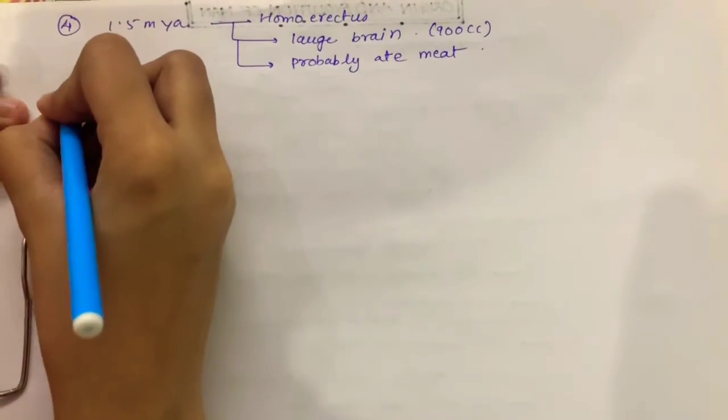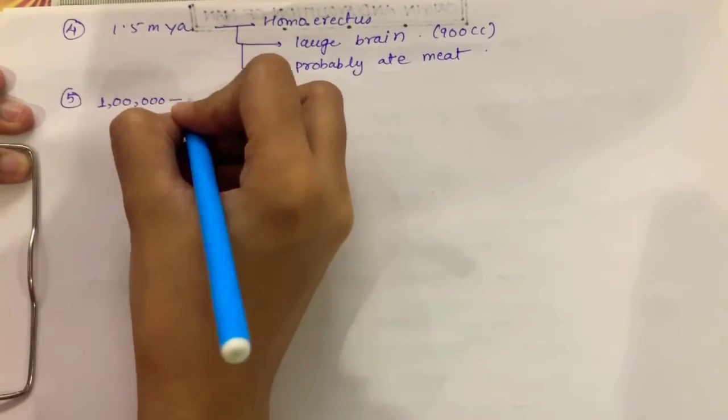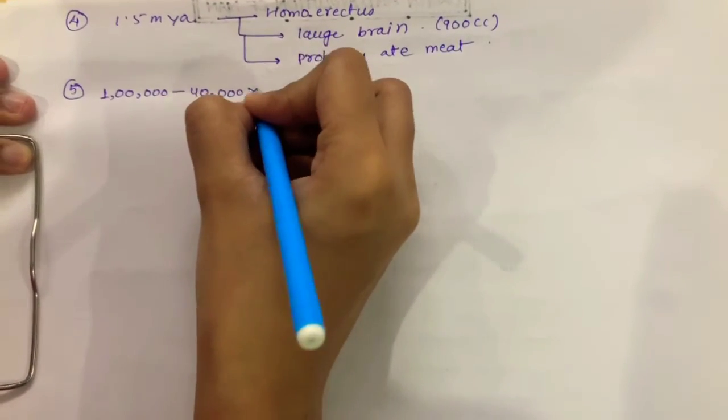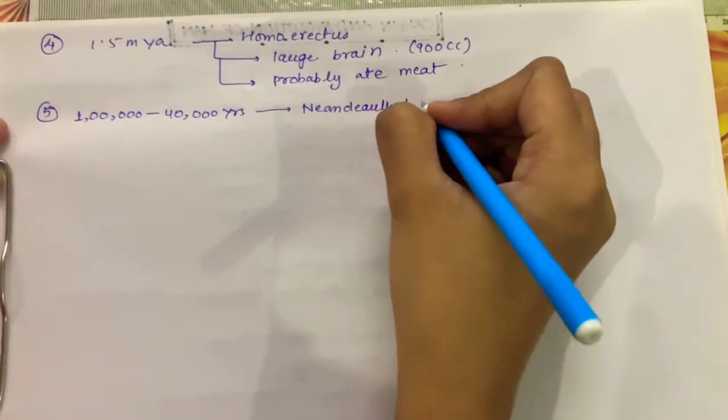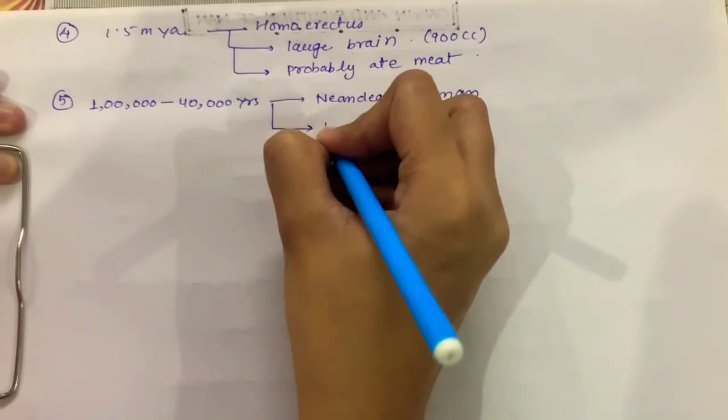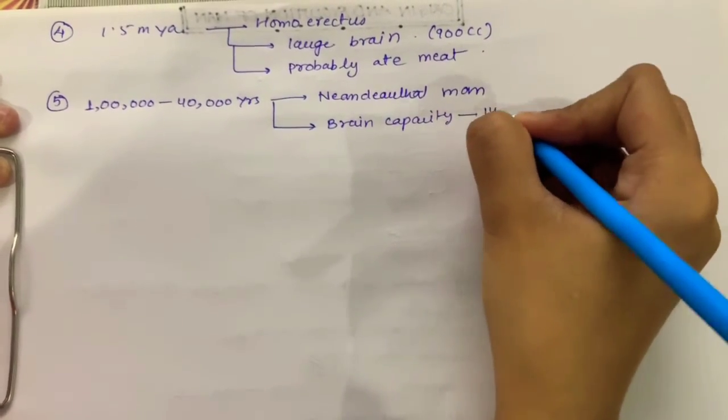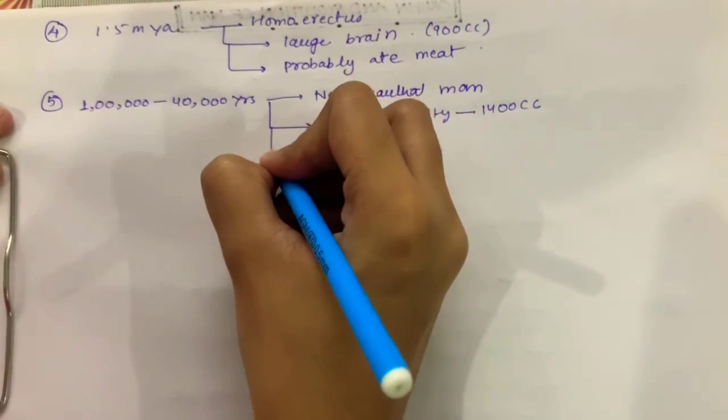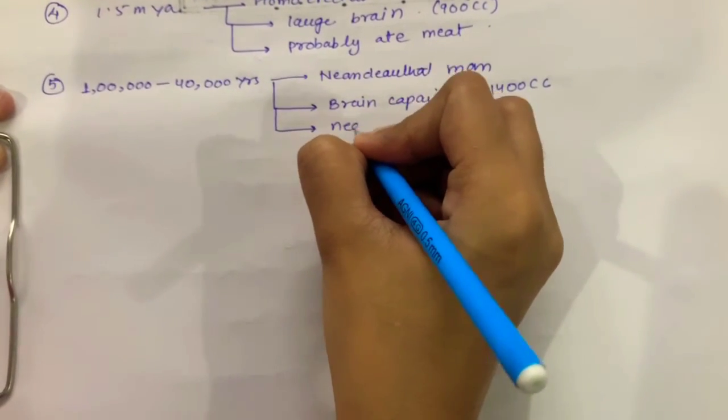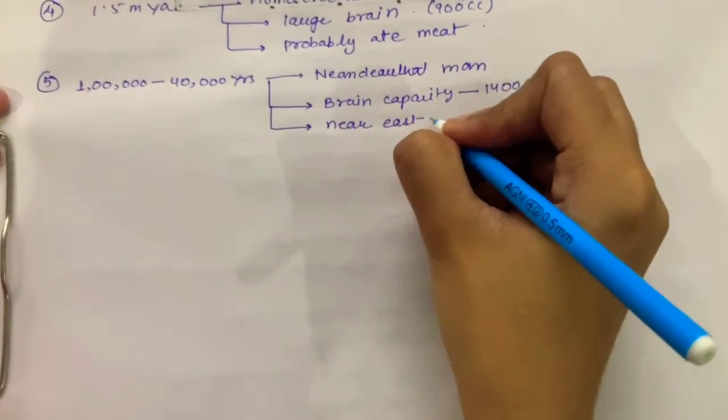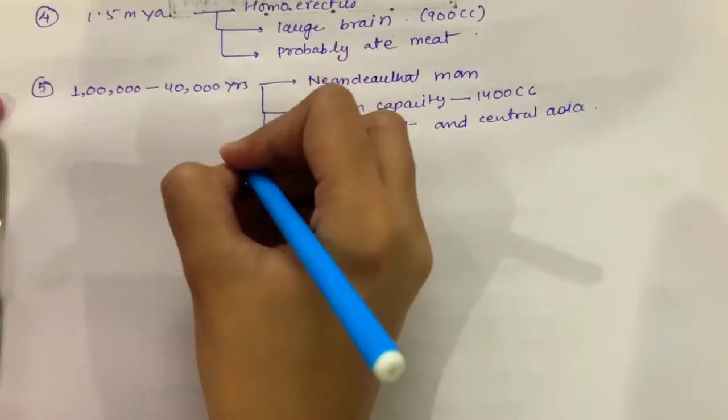Next, about 40,000 to 100,000 years ago, we have Neanderthal man. Their brain capacity was 1400 cc. Now there is a change in the place also. They were seen near East and Central Asia.